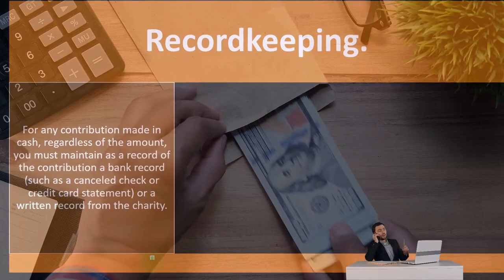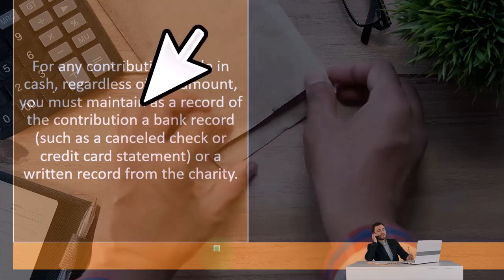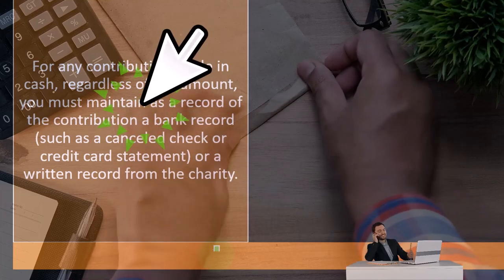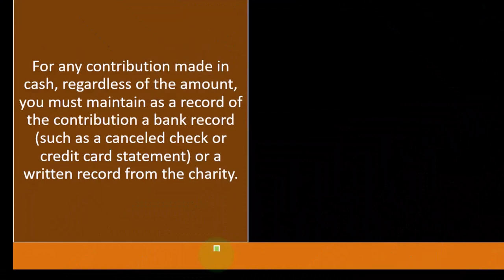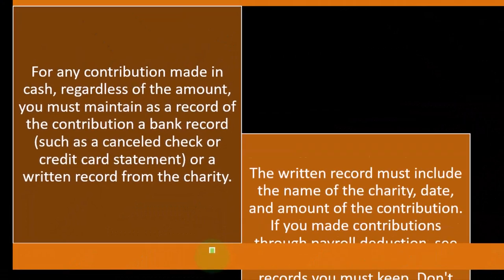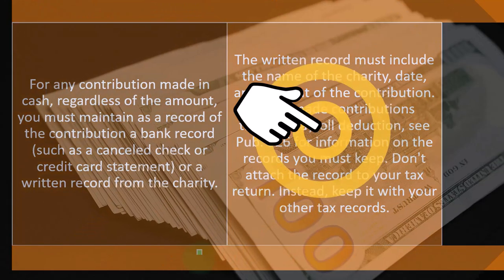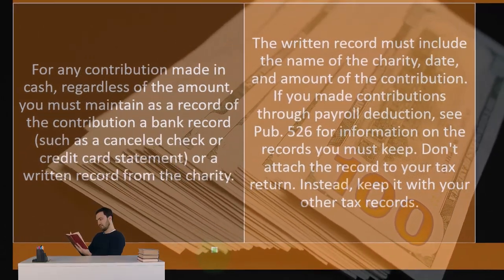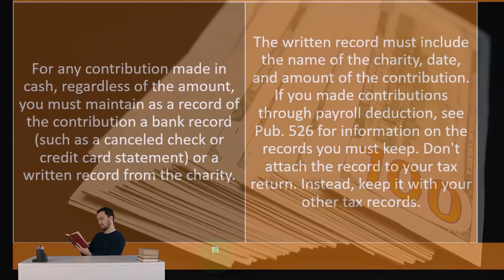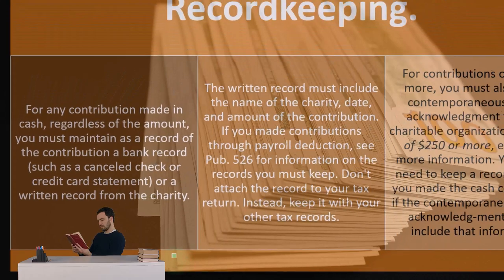Record keeping. For any contribution made in cash, regardless of the amount, you must maintain as a record of the contribution a bank record such as a cancelled check or credit card statement, or a written record from the charity. The written record must include the name of the charity, date, and the amount of the contribution. If you made contributions through payroll deduction, see Publication 526 for information on the records you must keep. Don't attach the record to your tax return; instead keep it with your other tax records.